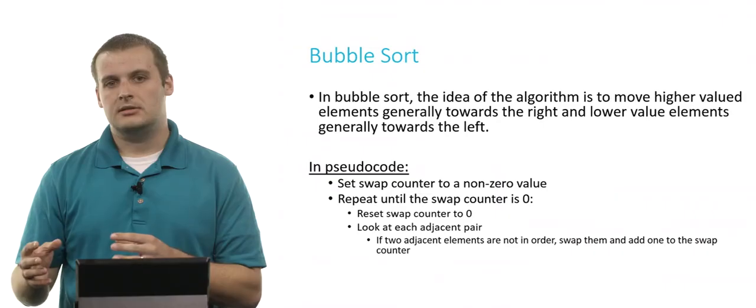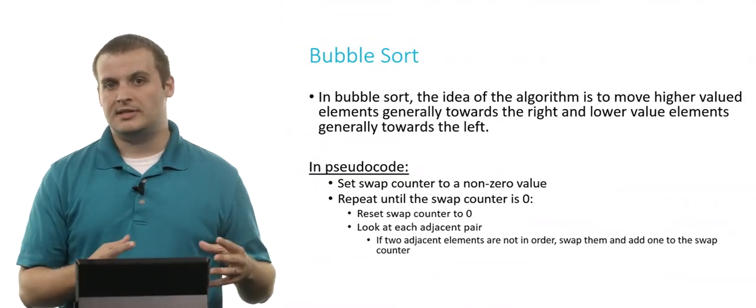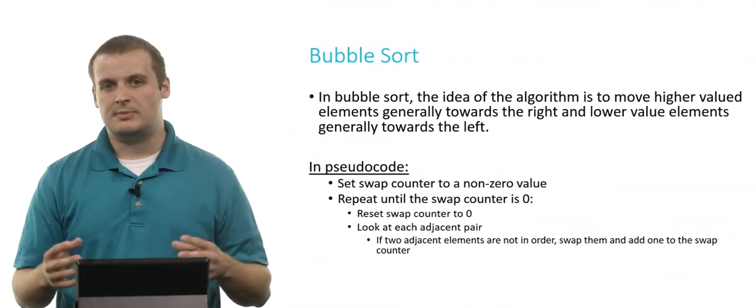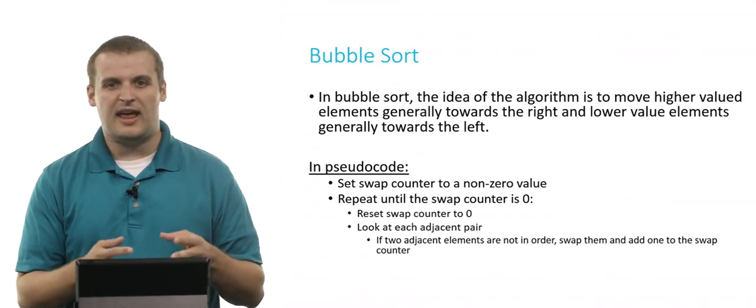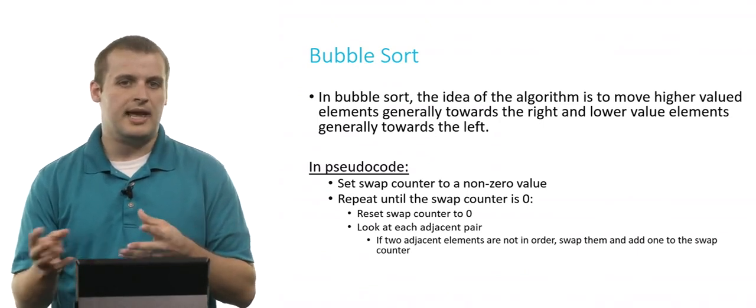Bubble sort is an algorithm we can use to sort a set of elements. The basic idea is that we want to move higher valued elements generally to the right and lower valued elements generally to the left. We want the lower things to be at the beginning and the higher things to be at the end.